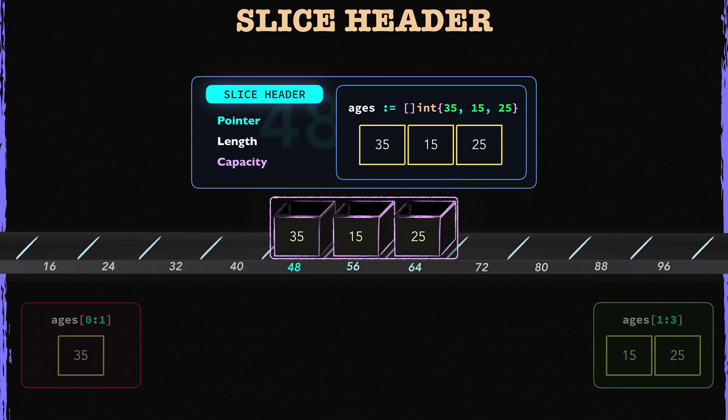The first field is the pointer field. It stores the memory location of the slice's backing array. Think of it as the phone number of the slice's backing array. For this slice value, its pointer is 48, and the backing array's first element is located in the 48th memory address. So the blue slice stores the memory address of the backing array's first element. Since an array is contiguous in memory, the blue slice can look ahead on the memory to find out the rest of the elements as well.